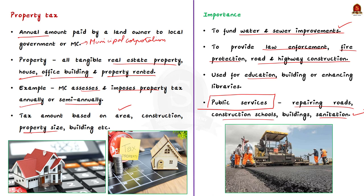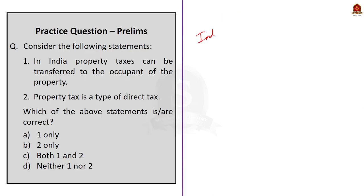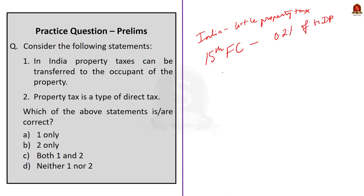Note that India collects very little amount of property taxes. The 15th Finance Commission suggested states to raise property taxes to increase their tax revenue. It also noted that in India, property tax collected is only 0.2% of its GDP, while OECD — Organization for Economic Cooperation and Development — countries had nearly 1% of their tax revenue coming from property taxation. This data can be used while writing the main answer. With this, we have come to the end of this particular discussion.